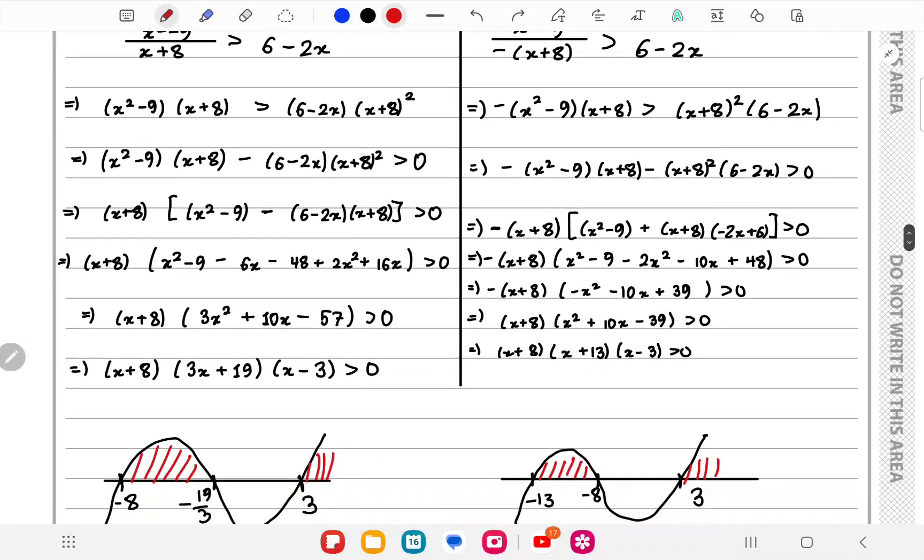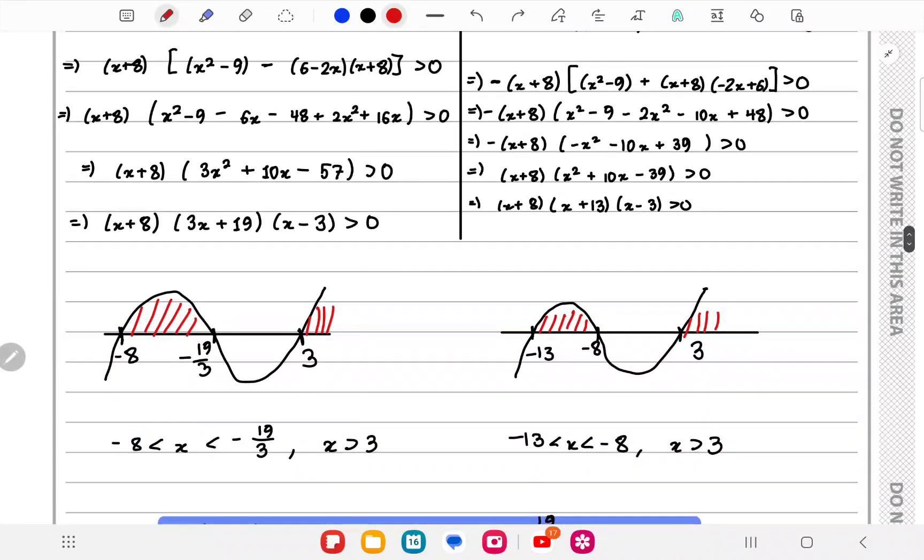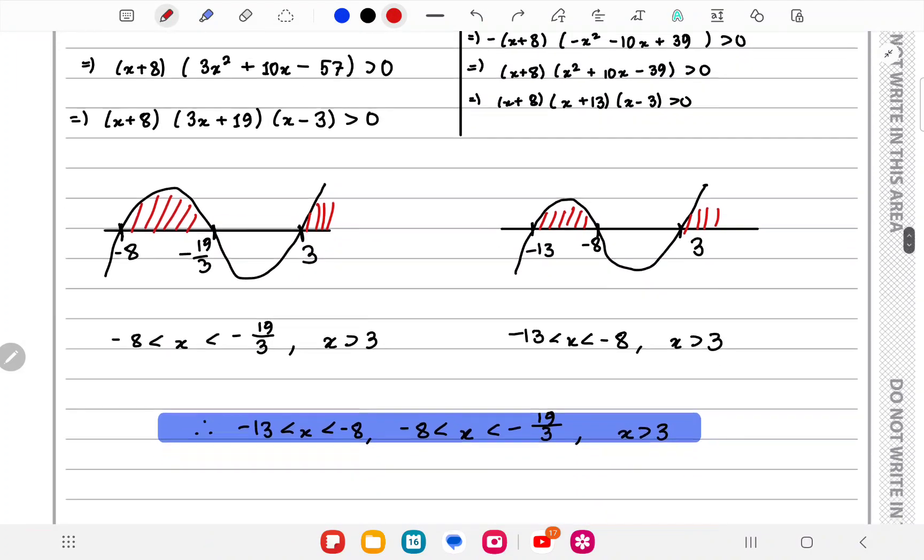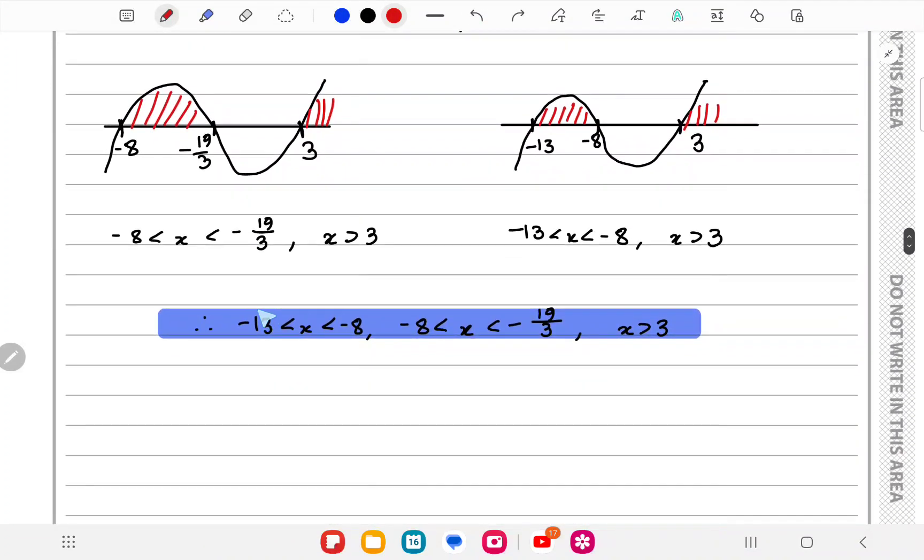Basically the union of this, not intersection. So this will be our answer: -13 < x < -8 from this case, -8 < x < -19/3 from the other case, and x > 3 which is common in both. And that's all from question 5.